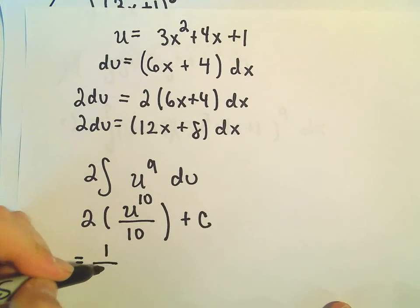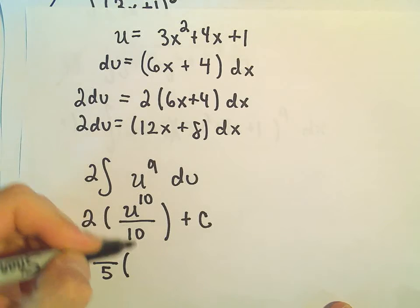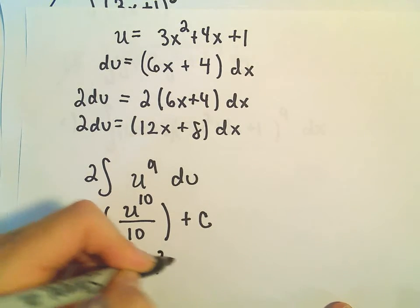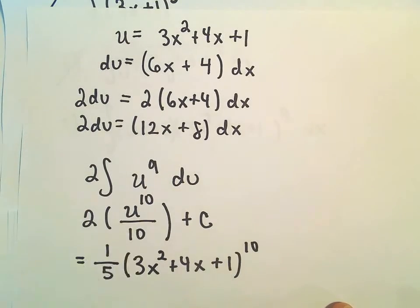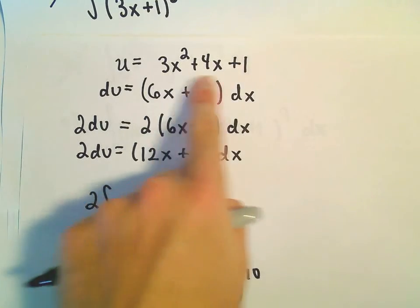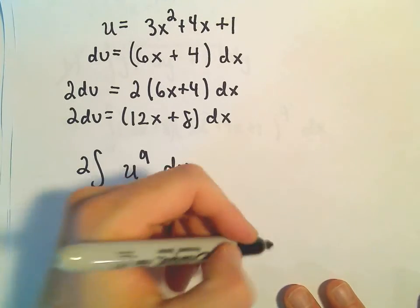Well, 2 over 10, that's going to give us 1 fifth. u is our 3x squared plus 4x plus 1. So now I'm just replacing our u with what we originally picked it as, and plus c.